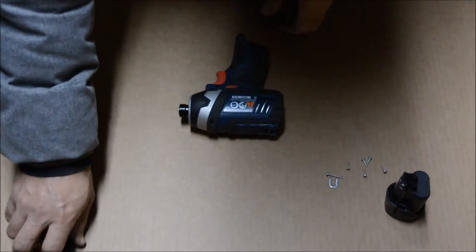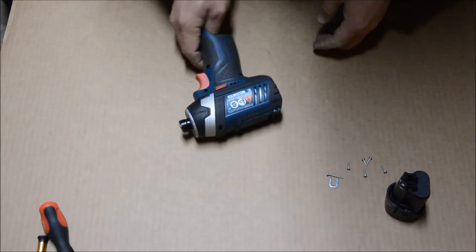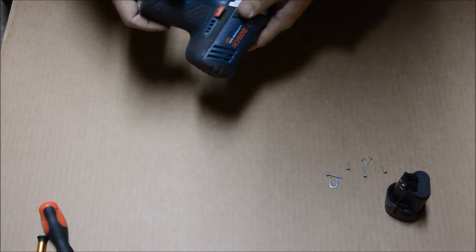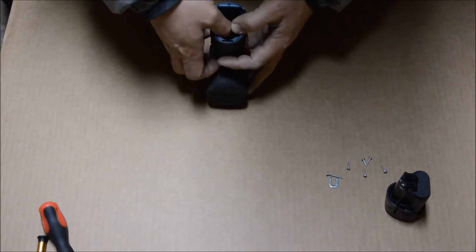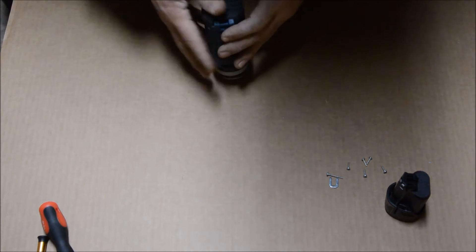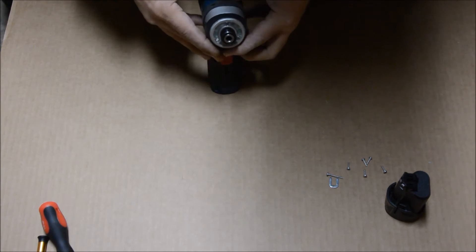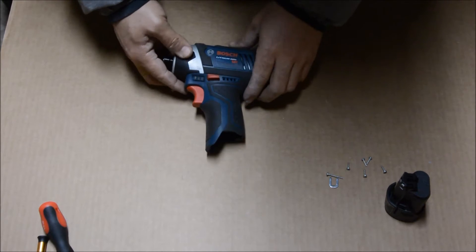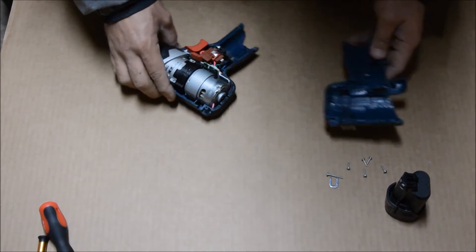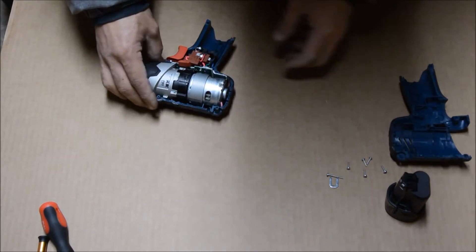When you first take this apart, it might be a little bit tough because all the rubber parts or rubber halves are fused together. So just be careful. Just put my thumbs in here and just pry it apart. Don't force it. That's one half apart.